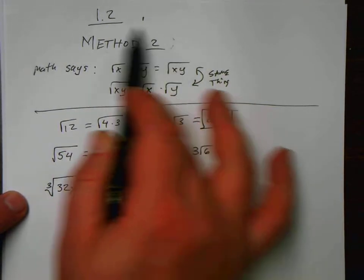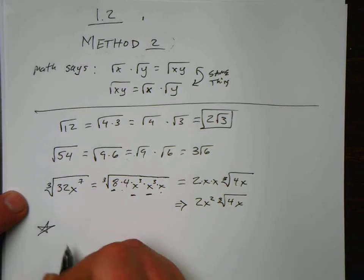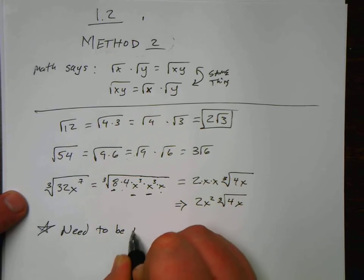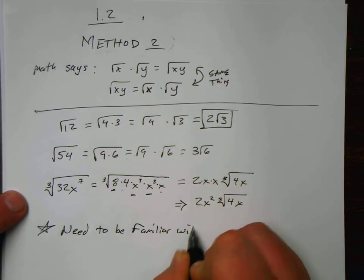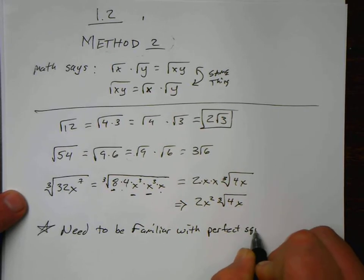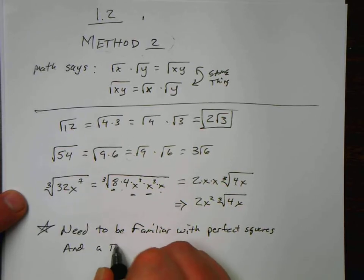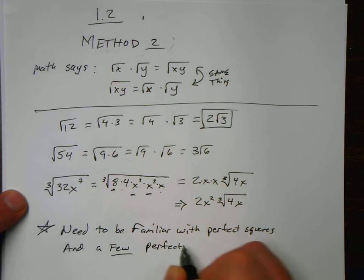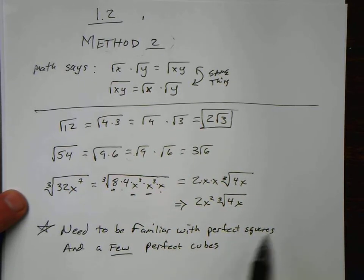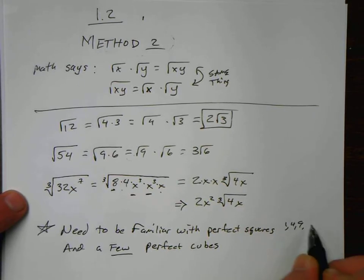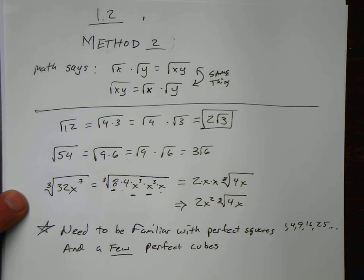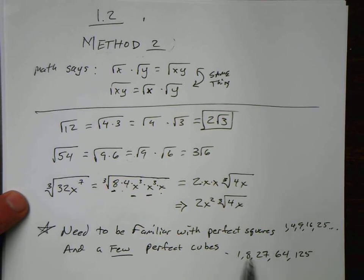If you're going to use method 2, if you're going to use this method, note you're going to need to be familiar with perfect squares and a few perfect cubes. So the perfect squares like 1, 4, 9, 16, 25. The perfect cubes, 1, because 1 times 1 times 1 is still just 1. 2 times 2 times 2 is 8. 3 times 3 times 3 is 27. 4 times 4 times 4 is 64. 5 times 5 times 5 is 125. Alright, so if you're familiar with these numbers and you know them really, really well, then method 2 might save you a lot of time.